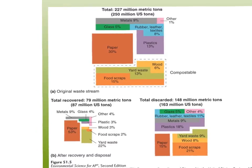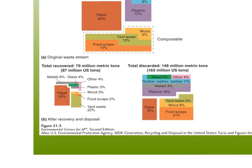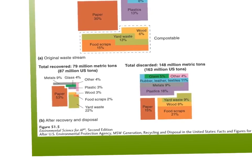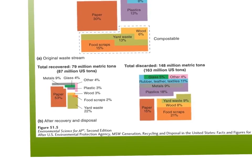After recovery and disposal, of that 30% of paper we throw away, we're able to recycle about 50% of it. The biggest percentage of stuff we successfully recycle is paper.